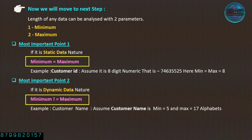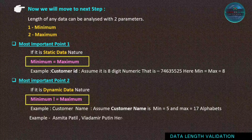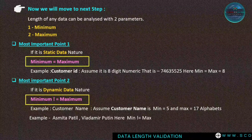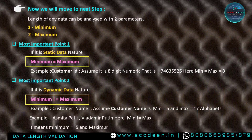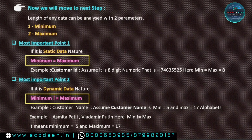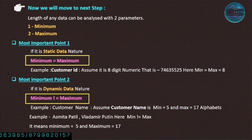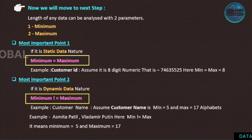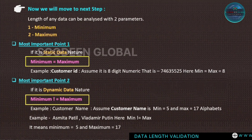If the data is dynamic by nature, the minimum will not be equal to maximum. For example, if the customer name minimum is equal to 5 and maximum is equal to 70 alphabets as given by the client, then the minimum value of customer name should be 5 and maximum should be 70.